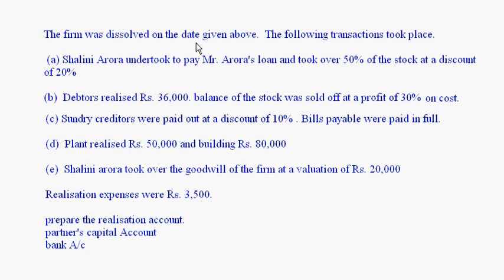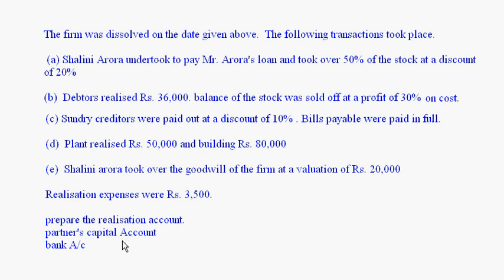The firm was dissolved on the date given. The following transactions took place: Shalini Aroda undertook to pay Mr. Aroda's loan and took over 50% of the stock at a discount of 20%. Debtors realized rupees 36,000. The balance of the stock was sold at a profit of 30% on cost. Sundry creditors were paid at a discount of 10%, bills payable were paid in full, plant realized rupees 50,000, building rupees 80,000. Shalini Aroda took over the goodwill at rupees 20,000, and realization expenses were rupees 3,500. We are required to prepare the realization account, partners' capital account, and bank account. We will start with the realization account.